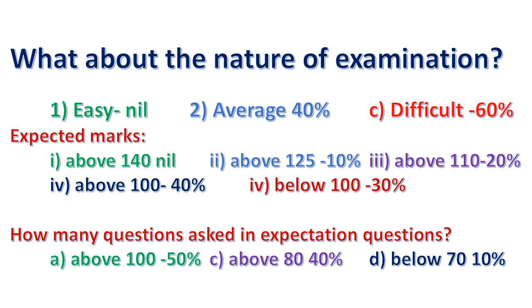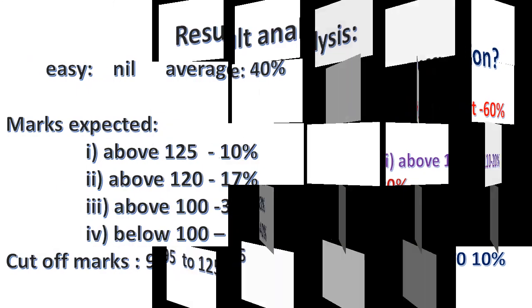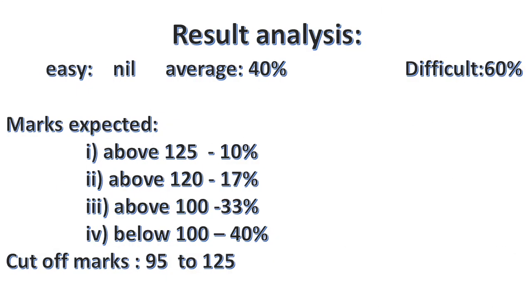There are 15 questions out of syllabus at the PG level. We will discuss this. Now, where are the cut-off marks? The average is 40% and we will discuss this further.